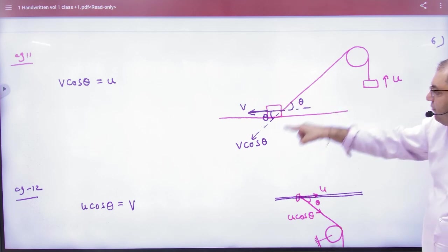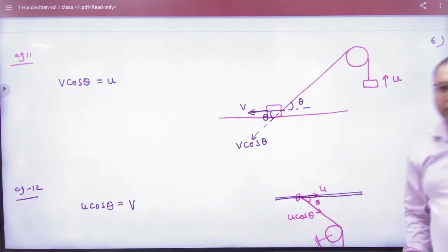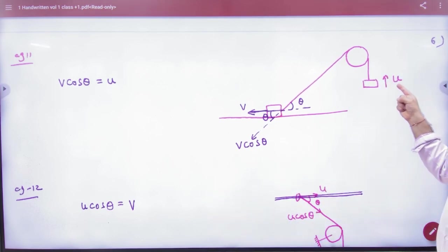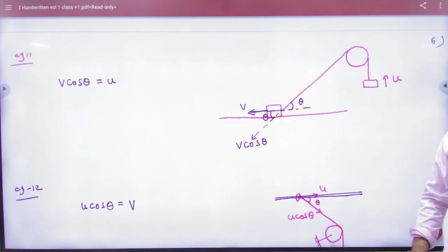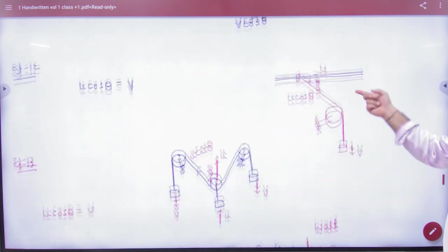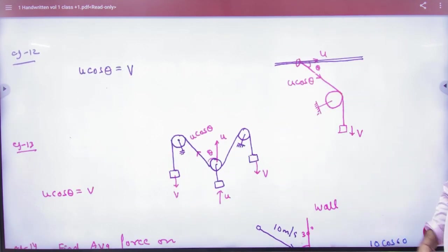v cos θ, u magnitude, what will be the same? The option: u is equal to v cos θ. You understand? This is a pulley. I pulled it from v. So this is a ring, this ring.